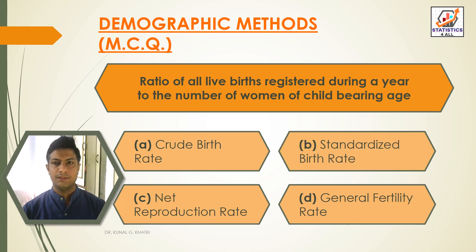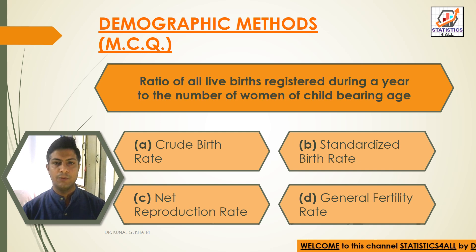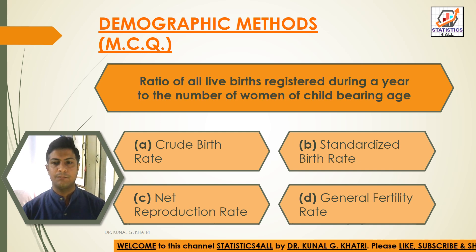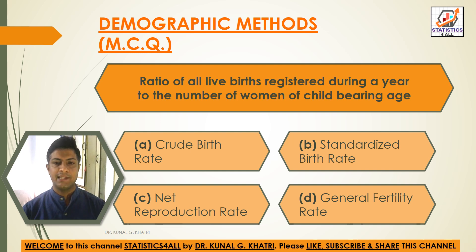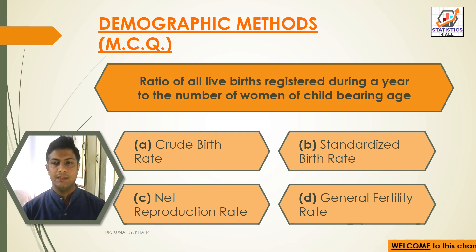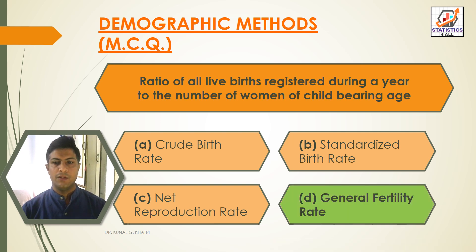Next question: the ratio of all live births registered during a year to the number of women of child-bearing age is equal to — Option A: crude birth rate, Option B: standardized birth rate, Option C: net reproduction rate, Option D: general fertility rate. The answer is Option D — general fertility rate.